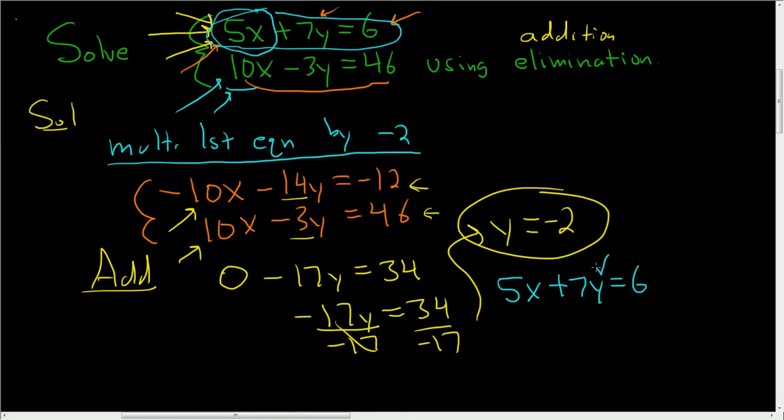And in the next step, we're going to replace y with negative 2. So 5x plus 7 times negative 2 is 6. So 5x minus 14 is 6.